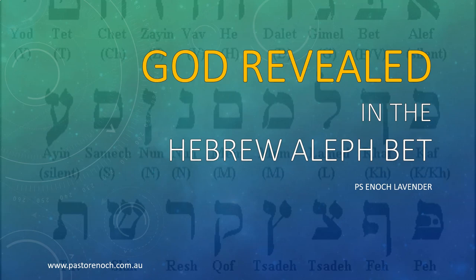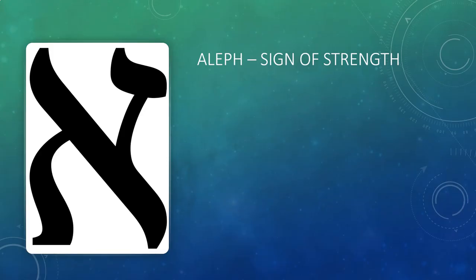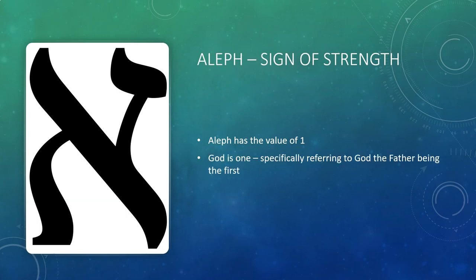Let's get started by looking at the first letter of the alphabet, which is known as Aleph. Aleph has the value of one. Basically it's like our A in English, but it is actually a silent letter. God is one, and so the number one and this first letter specifically refers to God the Father. He is the first. He is the Almighty. He is the Creator. It has meanings like being an ox or being a chief, being in charge — in other words, it relates to strength and power.